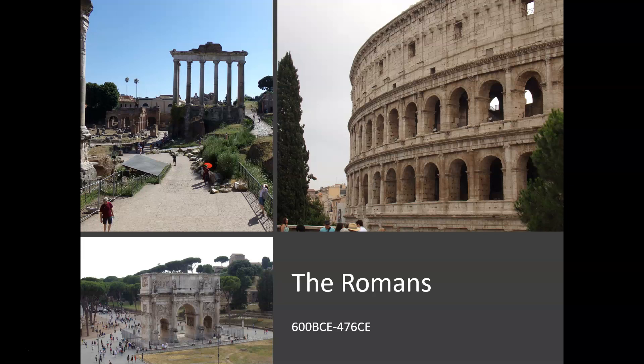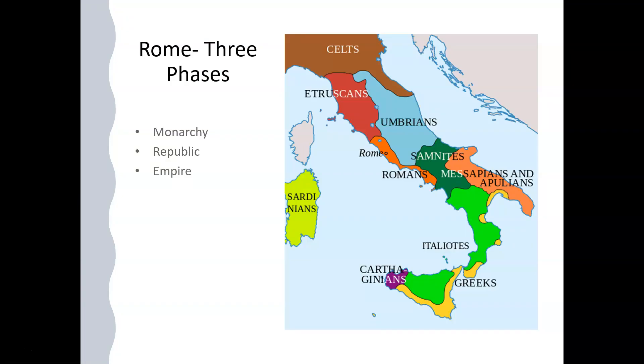And of course, the picture above is one of the many pictures that I will show you from the Roman Forum. The history of Rome is really centered around three phases: a phase of monarchy, a phase of republic, and a phase of empire.